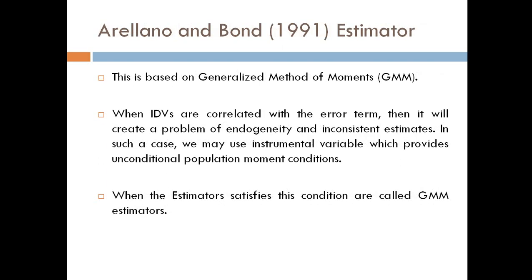Let's talk about the Arellano and Bond (1991) estimator. This is based on the Generalized Method of Moments, famously known as GMM. When independent variables are correlated with the error term, it creates a problem of endogeneity and inconsistent estimates. In such a case we may use instrumental variables, which provide unconditional population moment conditions.